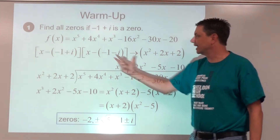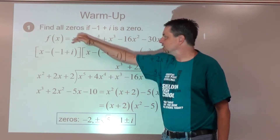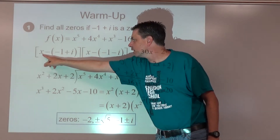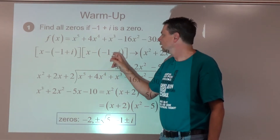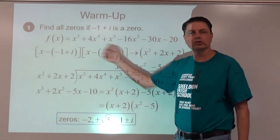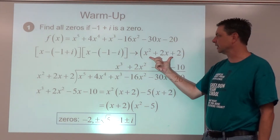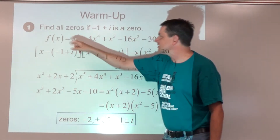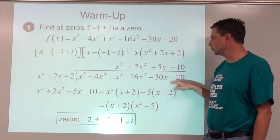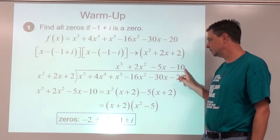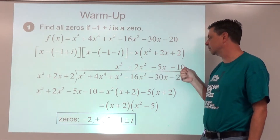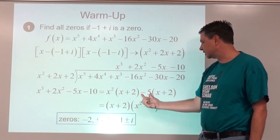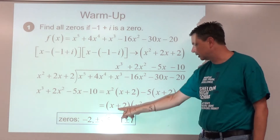That turns into a factor. If we distribute the minus and then regroup, we're going to get (x plus one minus i)(x plus one plus i). Multiply those two expressions together — that gives us x squared plus 2x plus 2. That's a factor, and it divides into our polynomial evenly. Then you might recognize a pattern: this does factor by grouping — factoring out an x squared, factoring out a negative five.